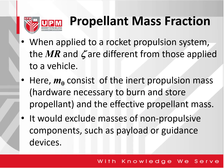When applied to a rocket propulsion system, the mass ratio and the propellant mass fraction are different from those applied to a vehicle. Here, the initial mass M0 consists of the inert propulsion mass — including the hardware necessary to burn and store the propellant — and the effective propellant mass. So it would exclude masses of non-propulsive components such as the payload or guidance devices.